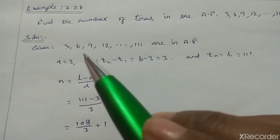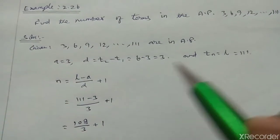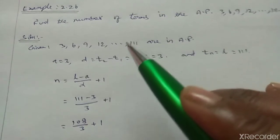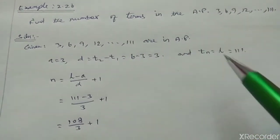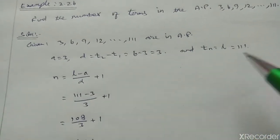The difference is second term minus first term: 6 minus 3 equals 3. And the nth term, that is the last term L, equals 111.